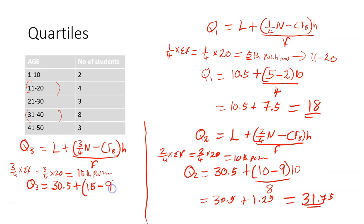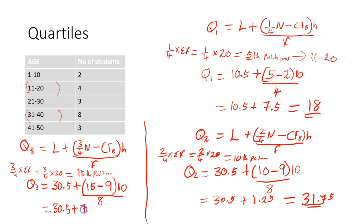So we substitute 9 there. The height H is 10, divided by the frequency of that specific class, which is 8. This gives us 30.5 plus — 15 minus 9 gives 6. And 6 times 10 is 60. 60 divided by 8 gives 7.5. So 30.5 plus 7.5 is 38. Hence, the third quartile is 38.